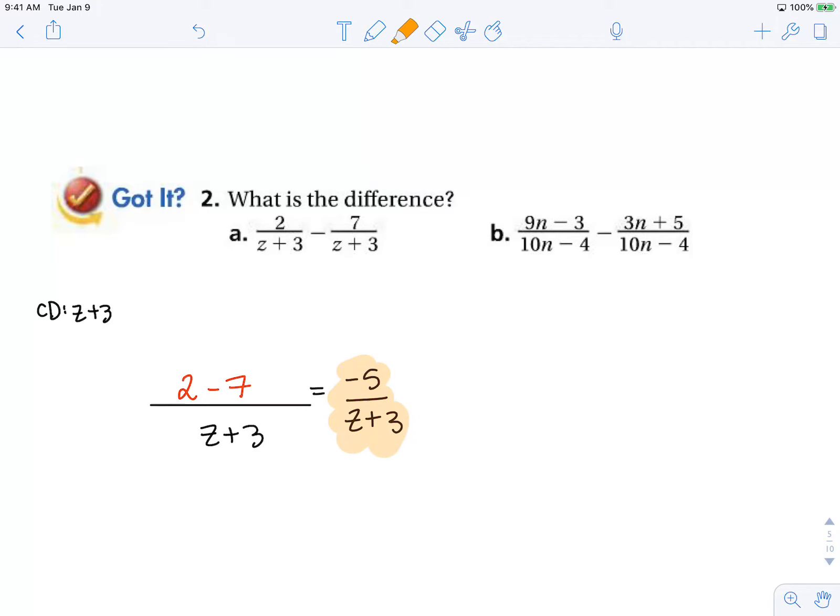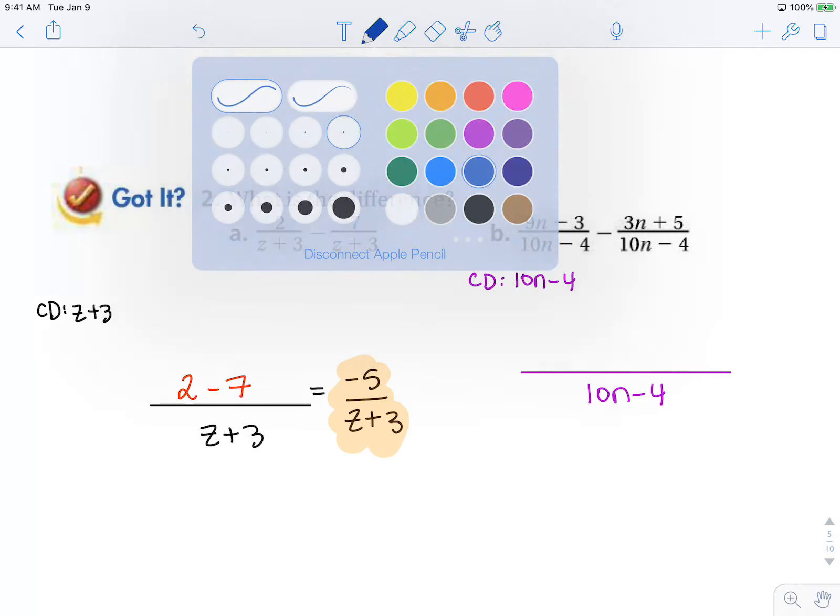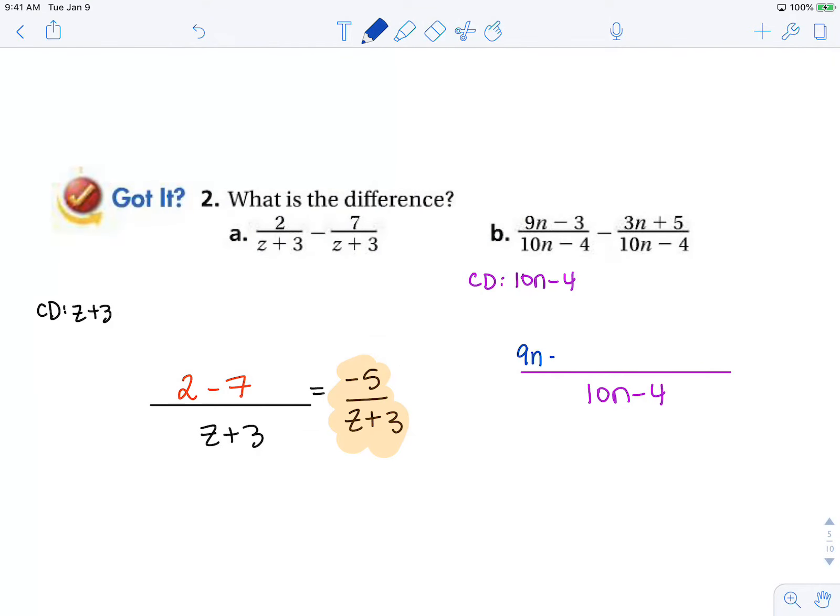Same thing here on part B: there's a common denominator of 10n minus 4, so we know what we combine from our numerators is going to be over 10n minus 4. That is going to be 9n minus 3. Now remember, we are subtracting this entire numerator, 3n plus 5, so don't forget when you're subtracting, you have to distribute that negative to both terms in that second numerator.